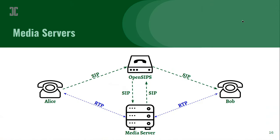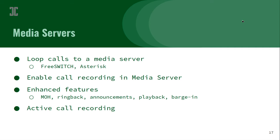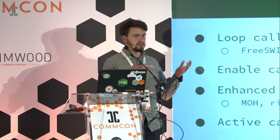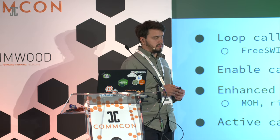Another idea for call recording is using media servers such as FreeSWITCH or Asterisk. Basically, you send the call, loop it through the media server, send it back to OpenSIPS, and terminate it to the customer. The media server will act as a back-to-back, receiving all the RTP traffic. It's fairly easy to activate call recording on either FreeSWITCH or Asterisk. This way you can add enhanced features such as music on hold, ringback, announcements, and even barge-in for call centers.